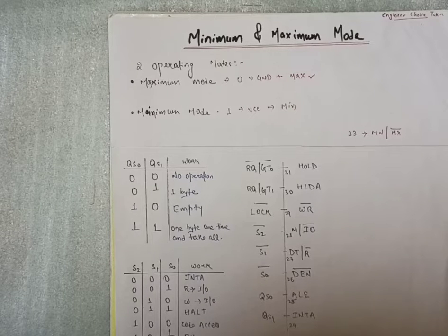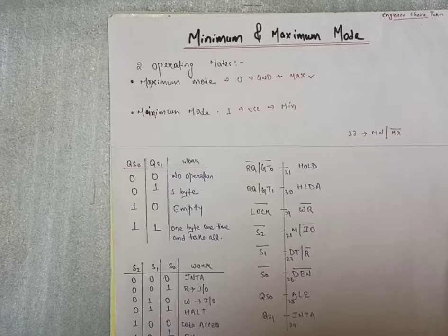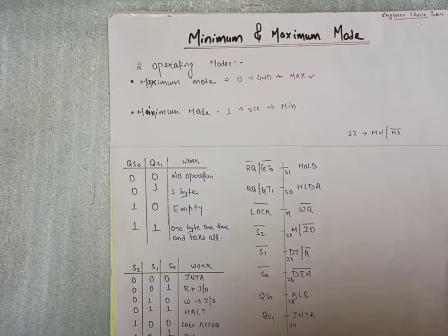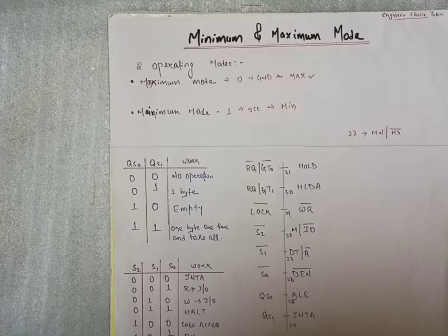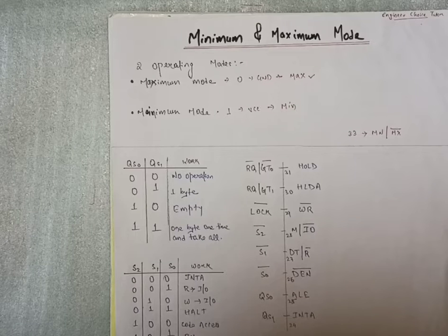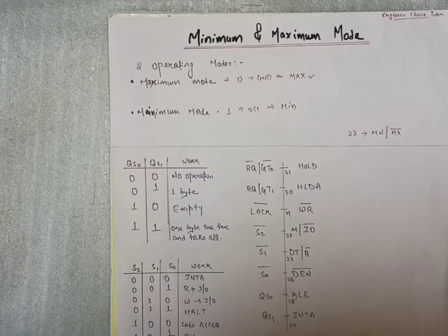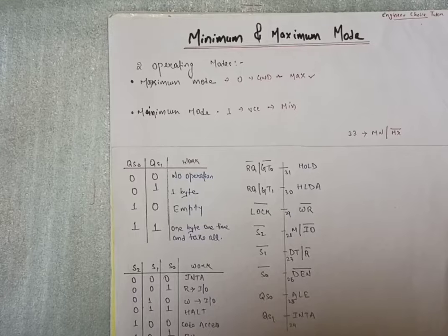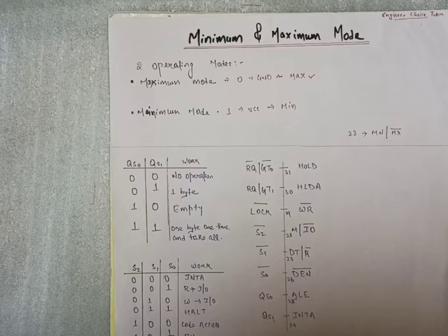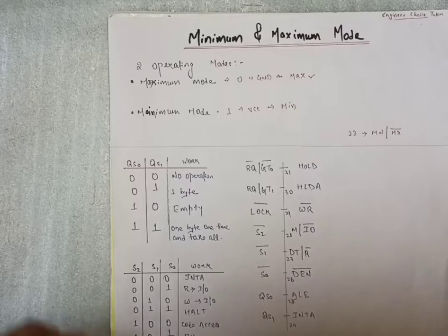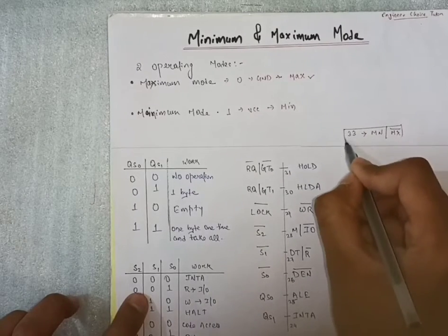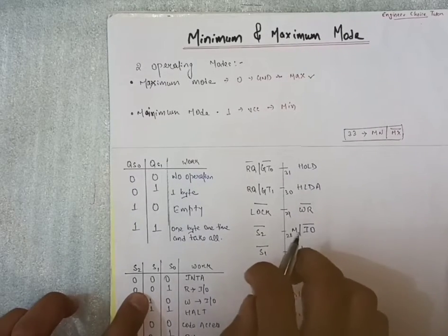This microprocessor works mainly in two modes, that is minimum and maximum. In the previous video, you can search or visit and see there is a pin named 33. In pin 33, the minimum and maximum modes operate only. Pin number 33, you can go and see that is minimum and maximum mode.